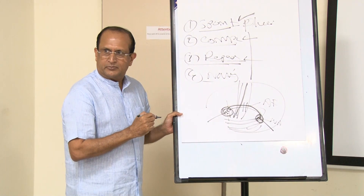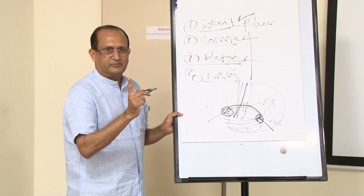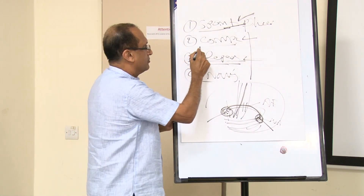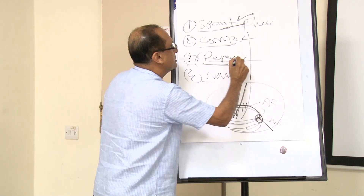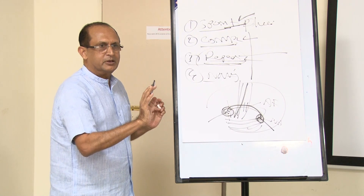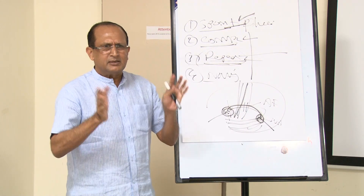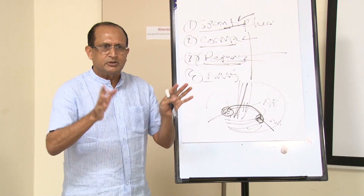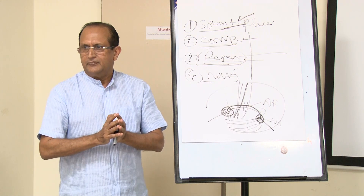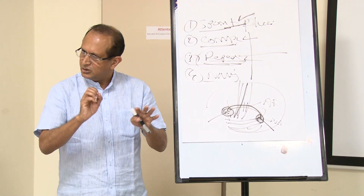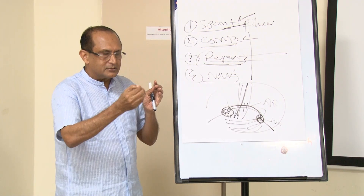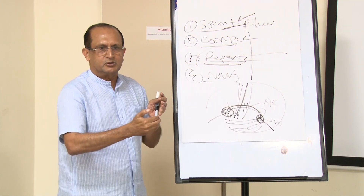If there is a lesion in the arcuate fasciculus, that is called conduction aphasia. In conduction aphasia, the patient again has fluent paraphasic speech, comprehension is intact, but repetition is markedly impaired. In the exam, at least you should be able to differentiate between dysarthria and aphasia, and pick up motor aphasia or Wernicke's aphasia using the four components.